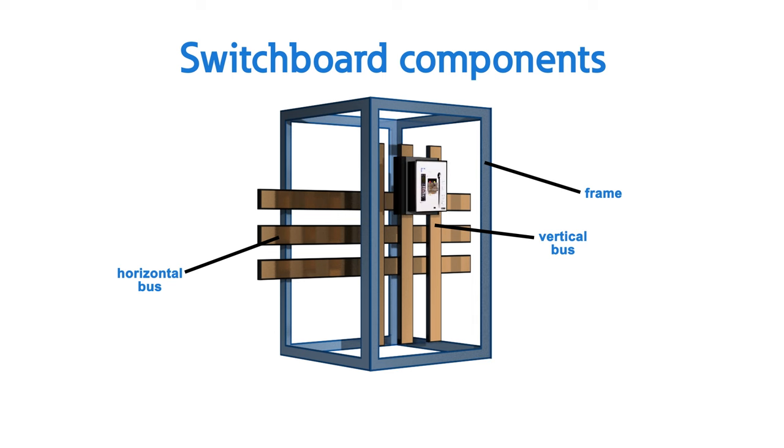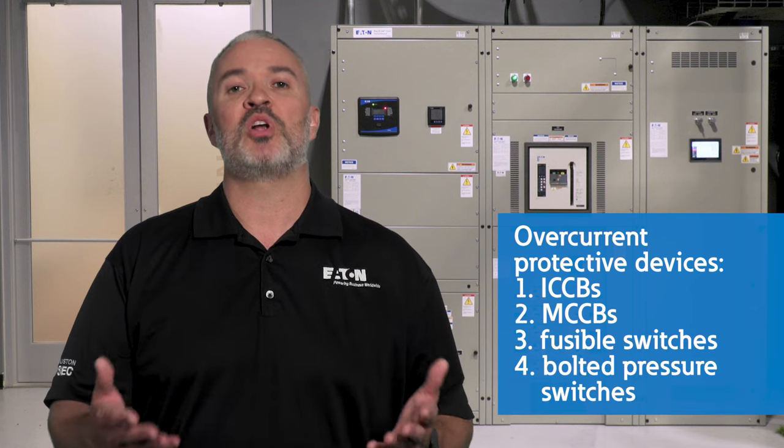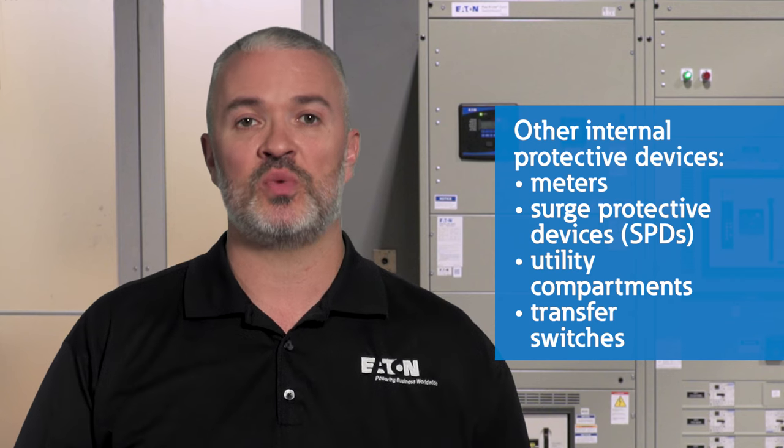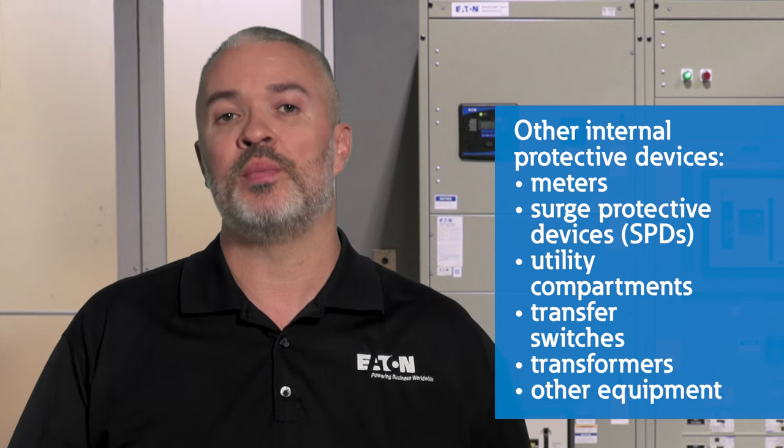The switchboard enclosure houses a number of critical components. Overcurrent protective devices are mounted to the vertical bus bars from the front of the unit. Four common types are insulated case circuit breakers, molded case circuit breakers, fusible switches, and bolted pressure switches. Other protective devices used in the switchboard interior may include meters, surge protective devices or SPDs, utility compartments, transfer switches, transformers, and other equipment.